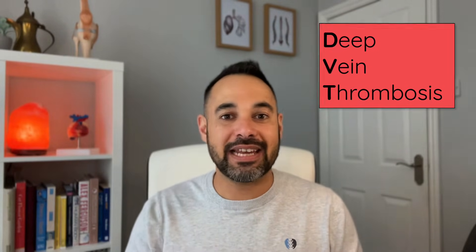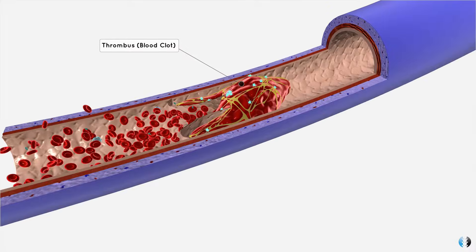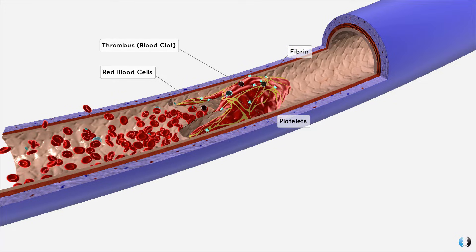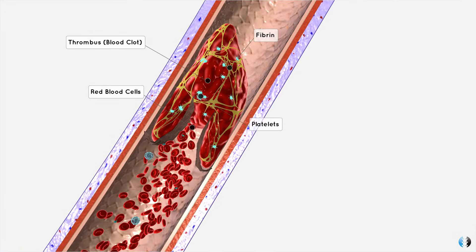DVT stands for Deep Vein Thrombosis, which quite simply is described as a blood clot within the veins. A blood clot or thrombus is a mixture of blood components, including red blood cells, platelets and fibrin, which clump together in a complex series of events known as the clotting cascade.